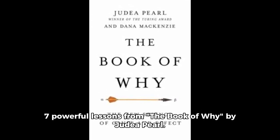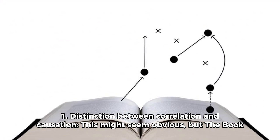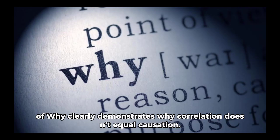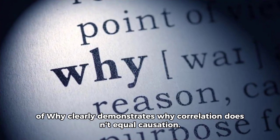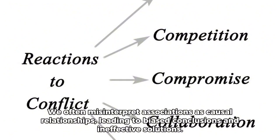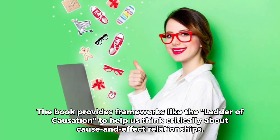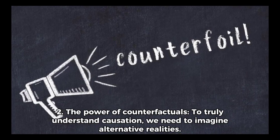Seven Powerful Lessons from the Book of Why by Judea Pearl. Lesson 1: Distinction between Correlation and Causation. This might seem obvious, but the Book of Why clearly demonstrates why correlation doesn't equal causation. We often misinterpret associations as causal relationships, leading to biased conclusions and ineffective solutions. The book provides frameworks like the Ladder of Causation to help us think critically about cause and effect relationships.